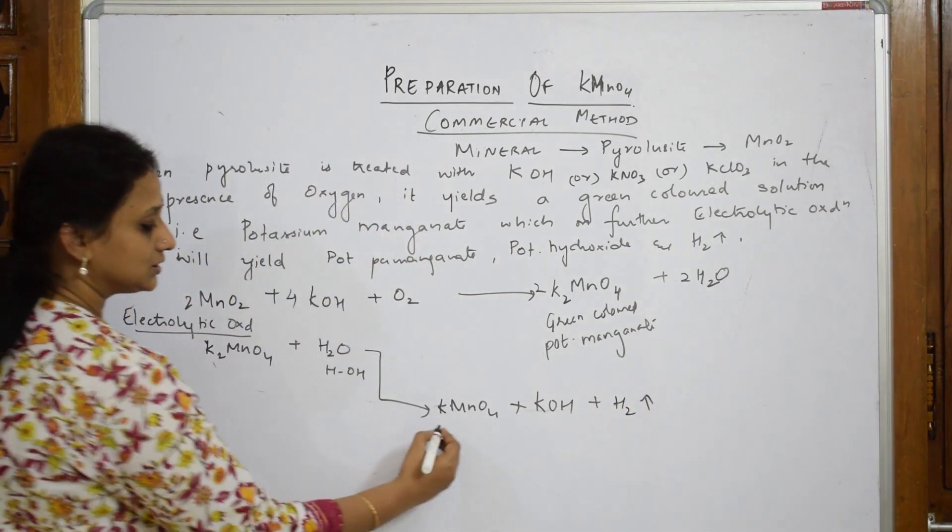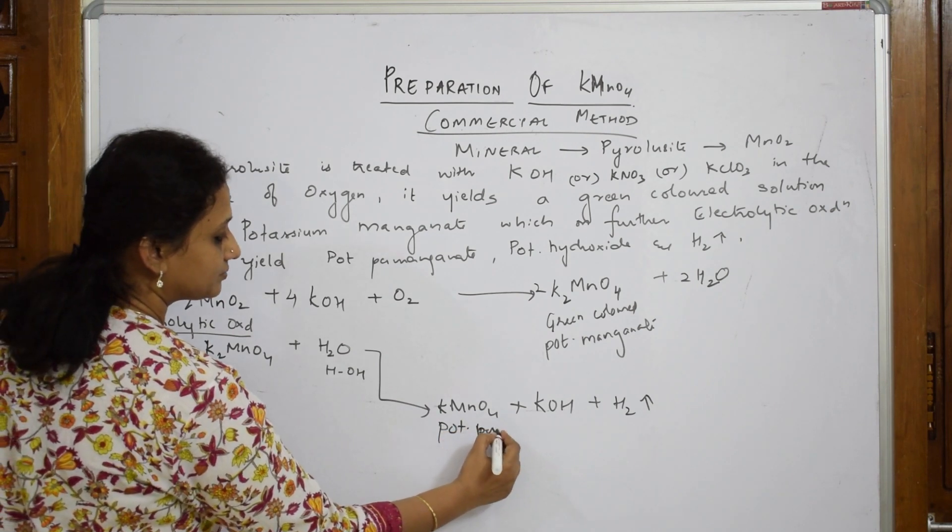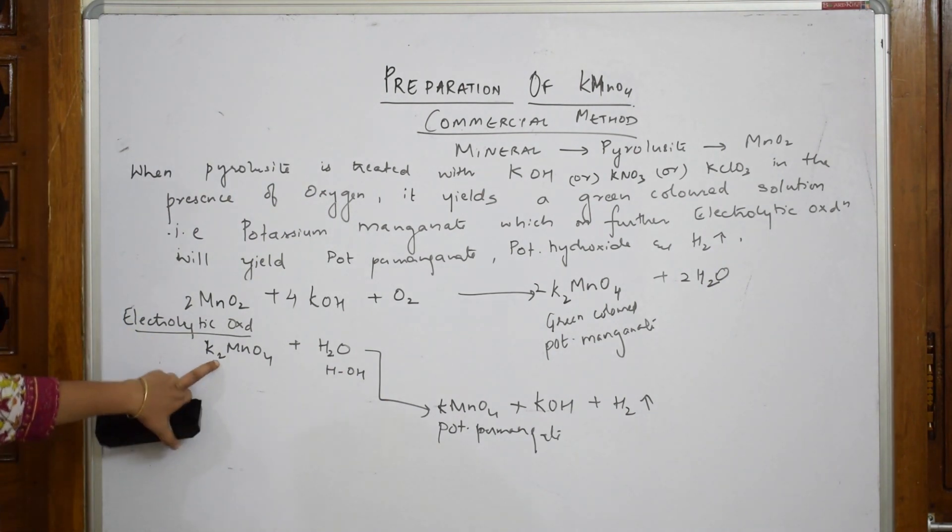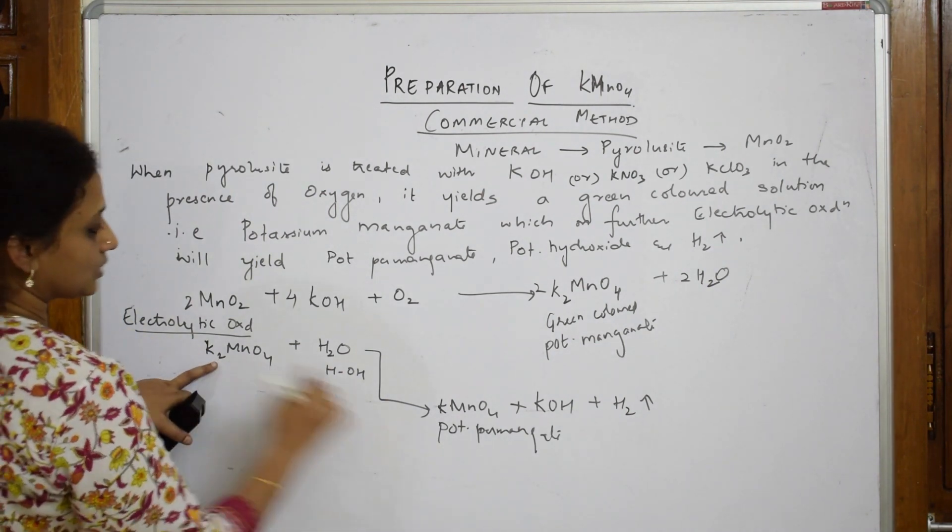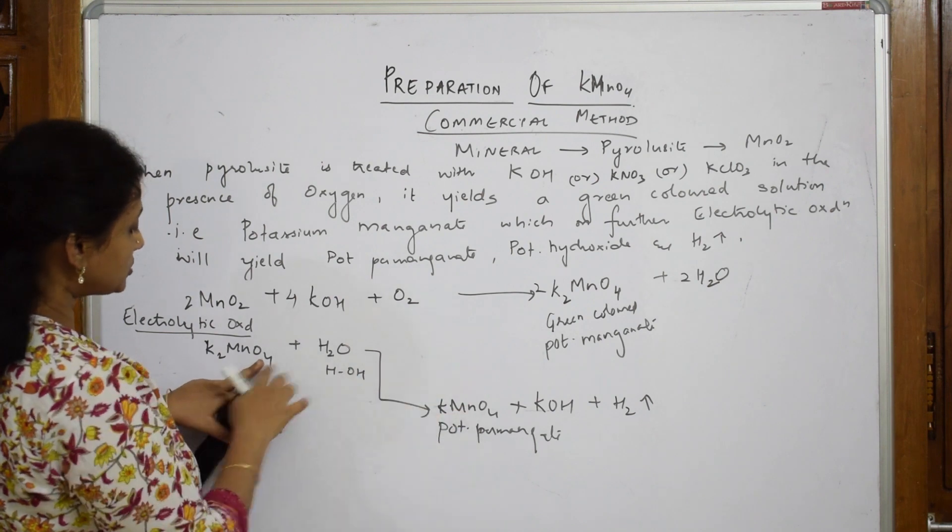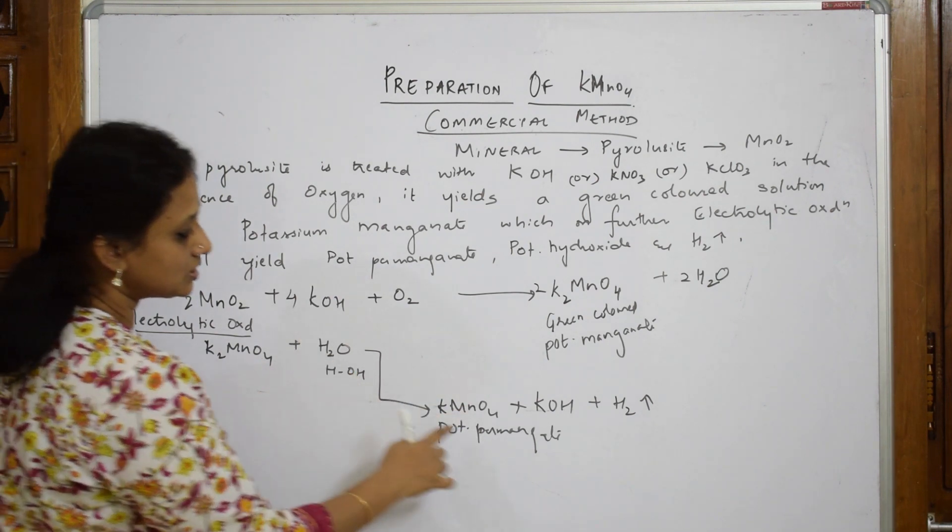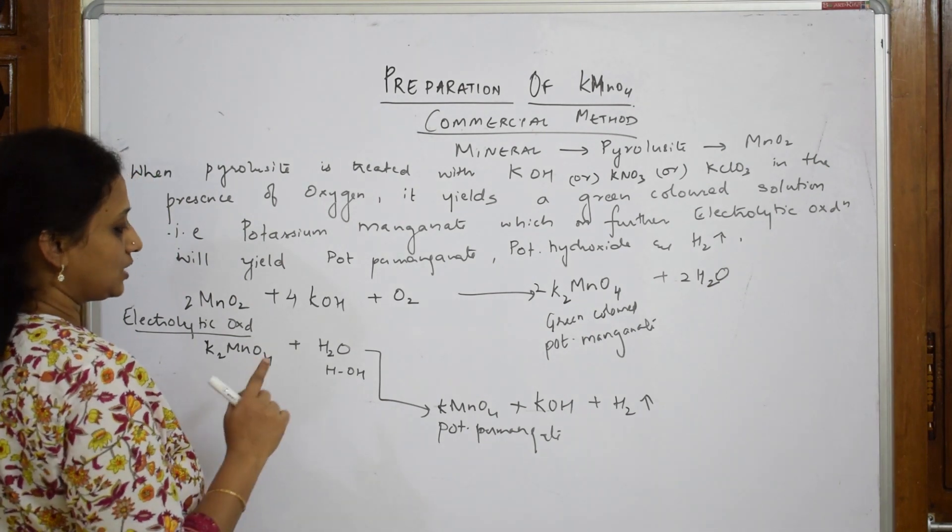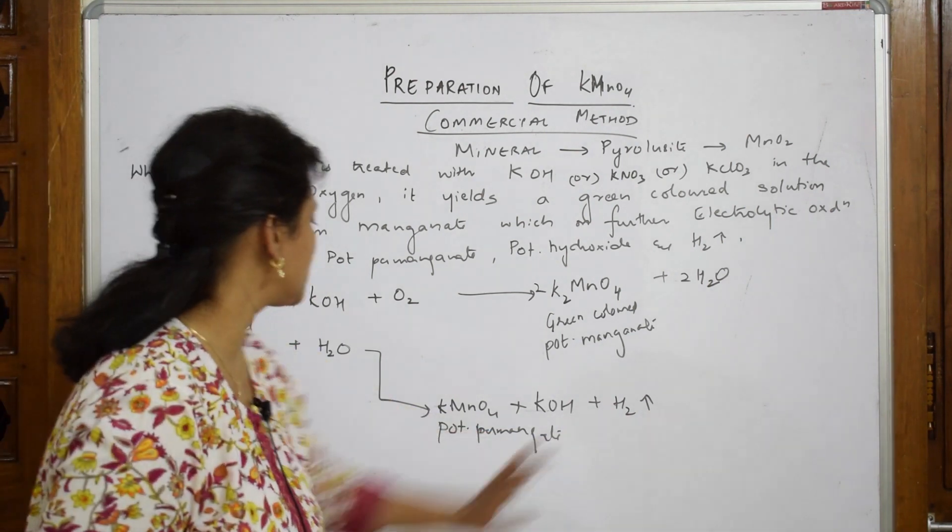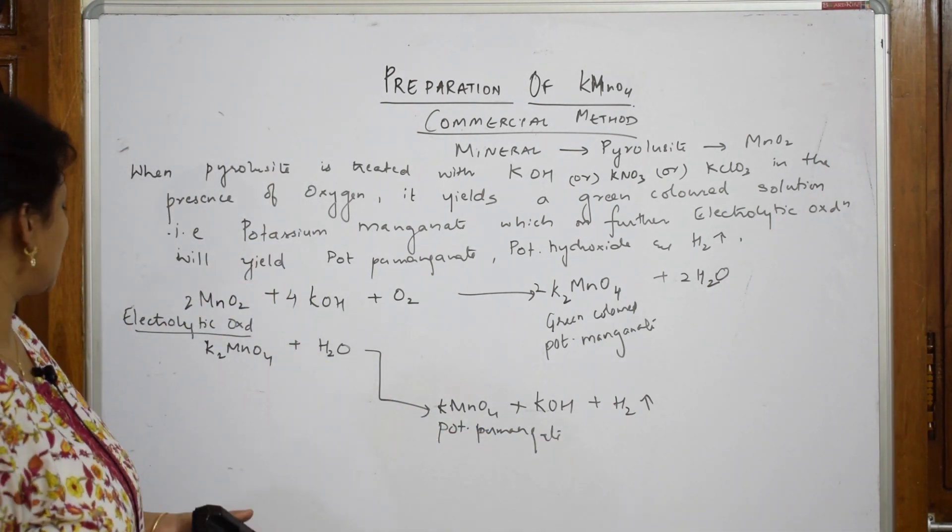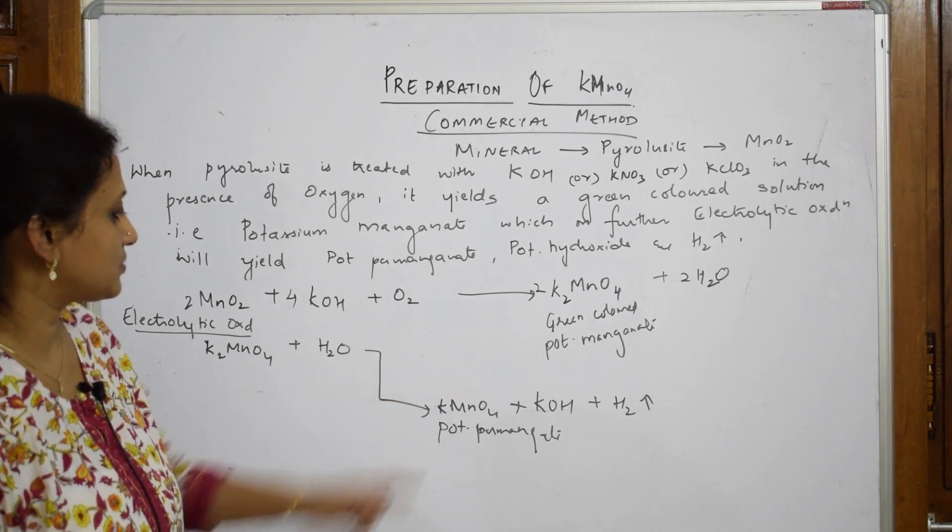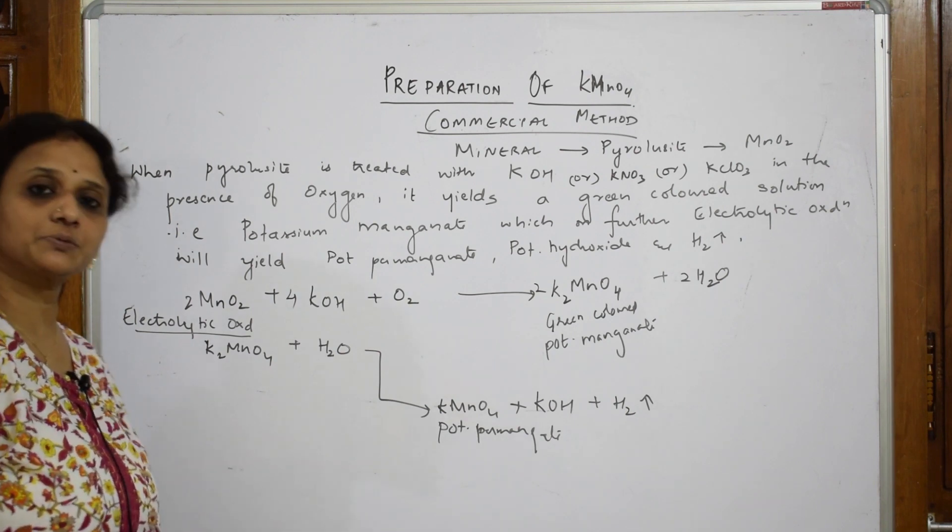This is your potassium permanganate. Now let's see if I have balanced. Potassium is two here, potassium is two here. Manganese is one here, manganese is one here. Oxygen is four plus one, five here. Oxygen is four plus one, five here. Hydrogen, if I have to take hydrogen is two here, hydrogen is two here. The reaction is almost balanced. Four plus one, five. Four plus one, five. Yes, it is balanced. This is your first preparation of potassium permanganate.